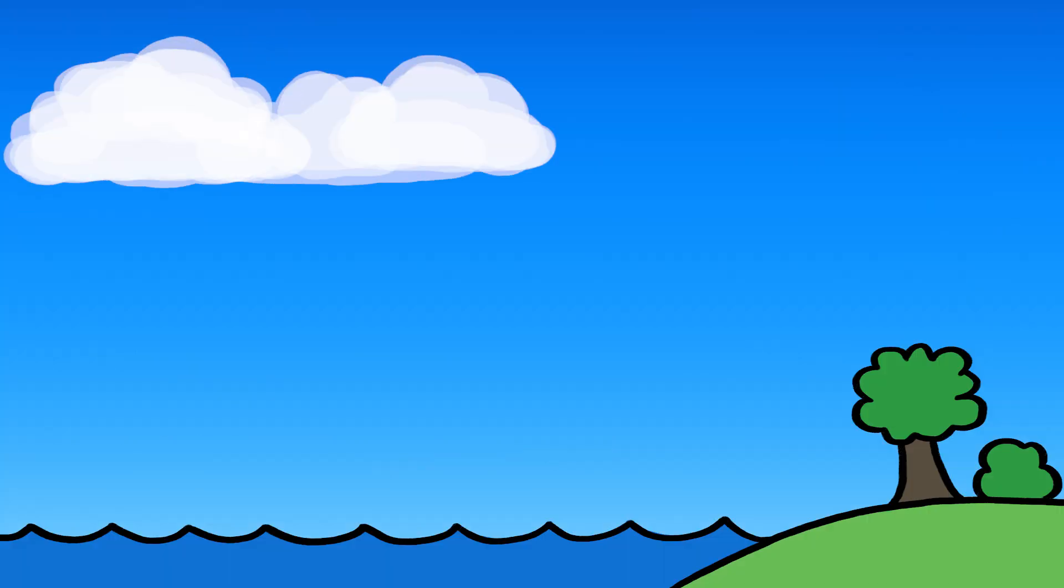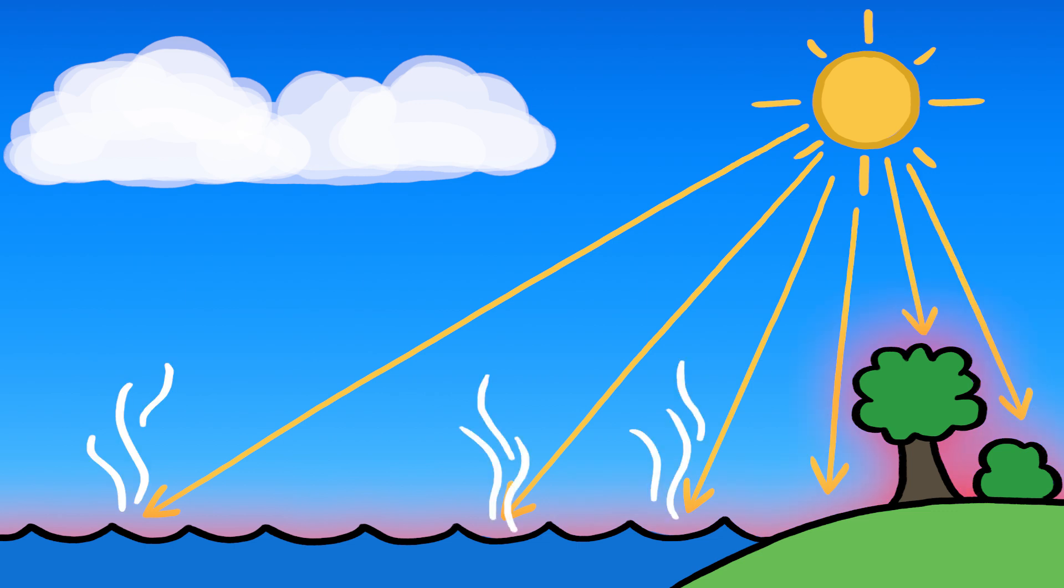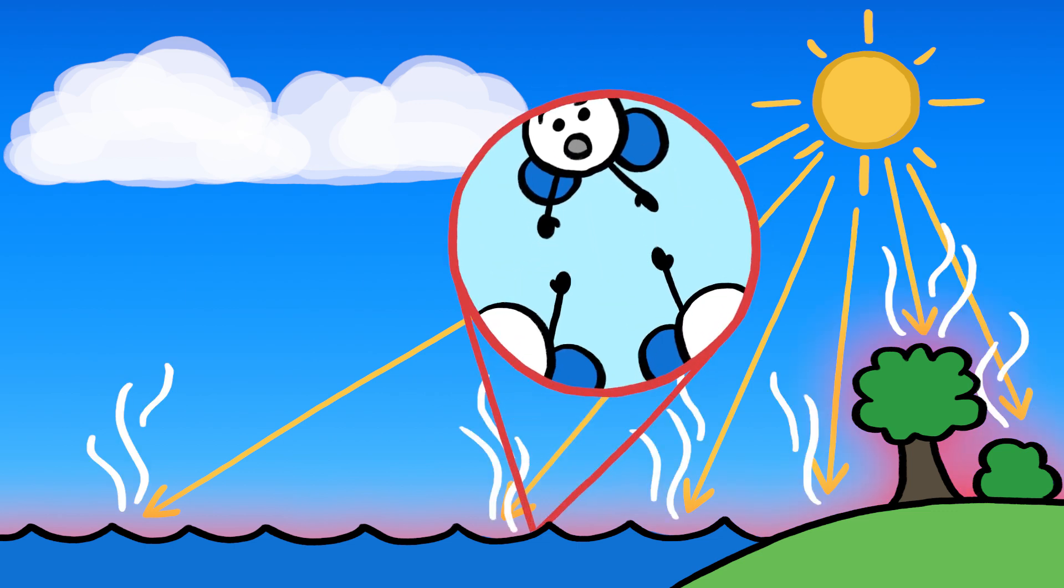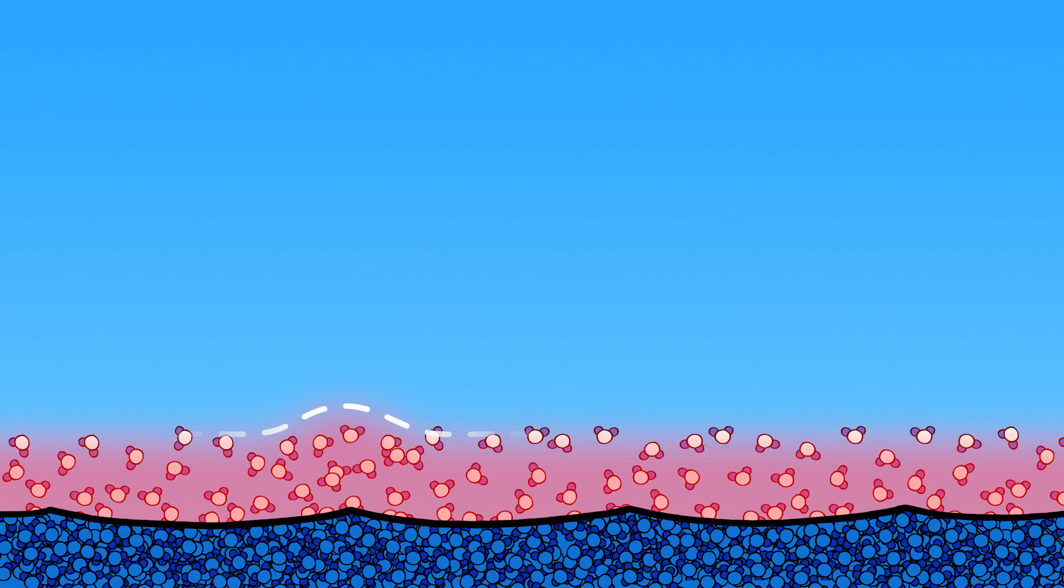Cumulus clouds, for example, get their start when solar energy evaporates water from oceans, plants, and soil by breaking the bonds that hold water molecules together. As the patch of air above collects moisture and heat, cooler, heavier air sinks around it, pinching it off and pushing it aloft like an invisible hot air balloon.